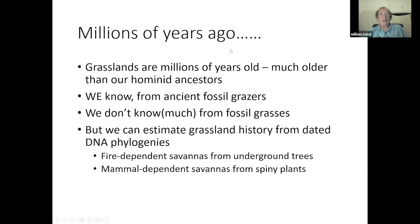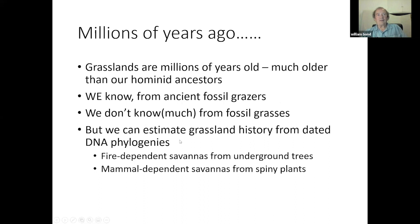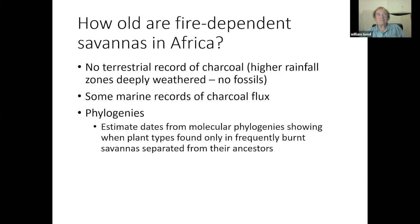Grasslands are millions of years old — much older than our hominid ancestors. We know this from fossils of ancient grazing animals. And in the last few years, molecular phylogeny has given us a new way of exploring when things happened in the past. Let's look at how we've used those phylogenies to explore how old African savannahs really are.